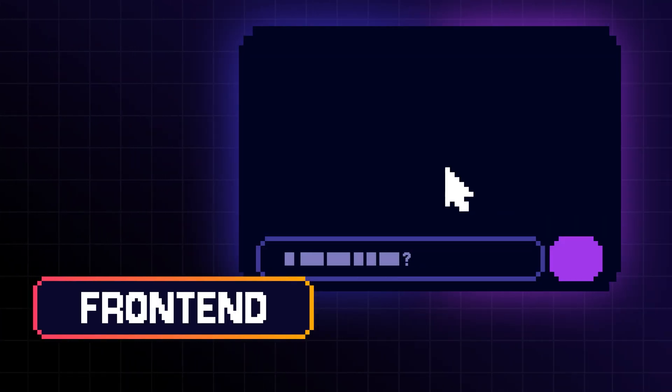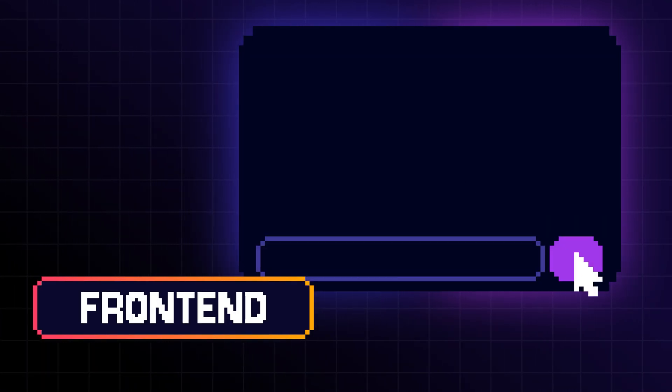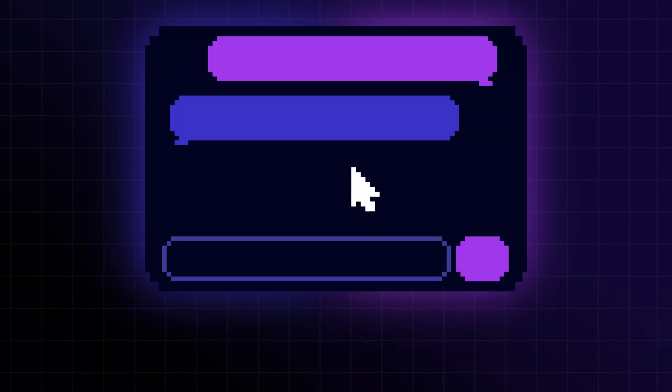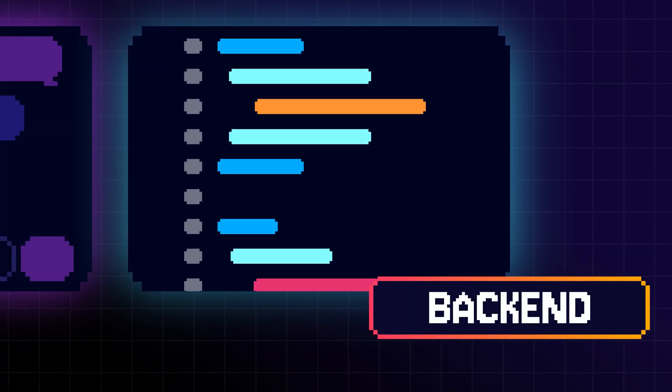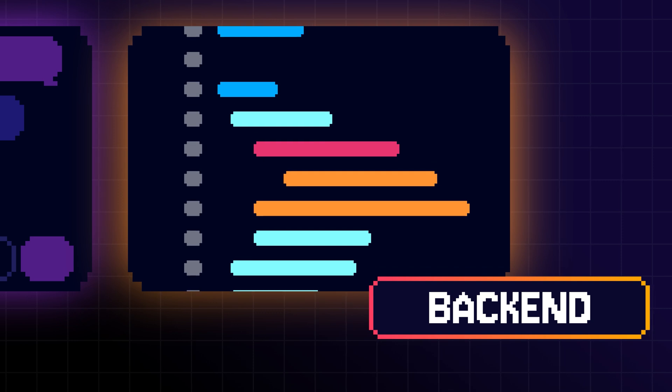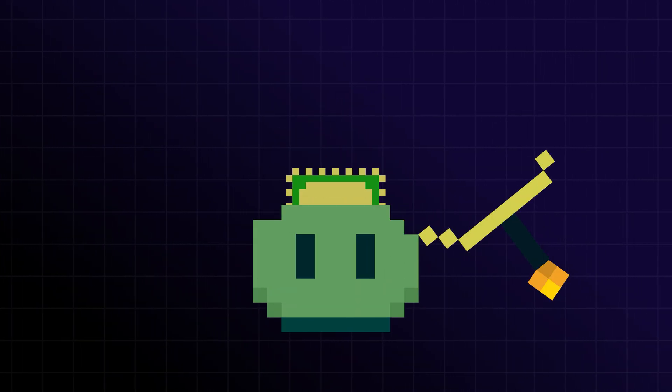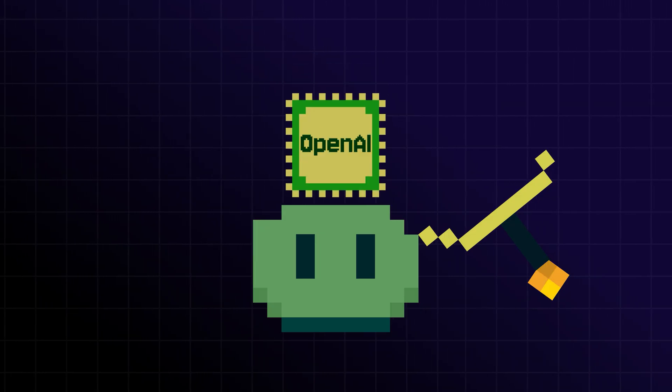Before we get into it, it's helpful to understand a little bit about how an app like this works. There are three distinct parts. There's the front end, which is the pretty part that the user interfaces with — everything that you see. Then there's the back end, which is all the hidden code behind the scenes, which also houses your secrets. Today, I'm going to use OpenAI.